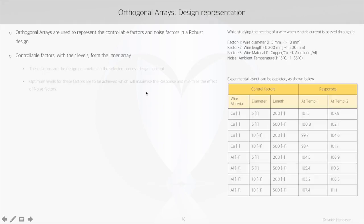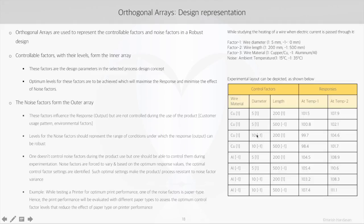The factor levels are also selected carefully as we have shown here in the table. Now the design factors or the controllable factors with their levels form the inner array in case of an orthogonal array. The objective of the experiment is to find the optimum levels for these factors in the inner array. The noise factors on the other hand are in the outer array.